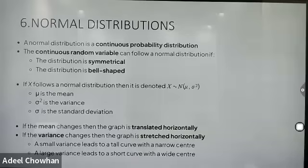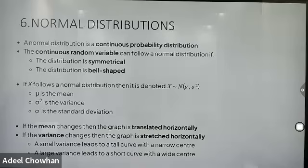Then normal distribution. A normal distribution is a continuous random variable distribution. It is a symmetrical distribution and is of bell shape. There are two parameters: mu (μ), which is the mean, and sigma squared (σ²), which is the variance. The square root of the variance is known as the standard deviation.